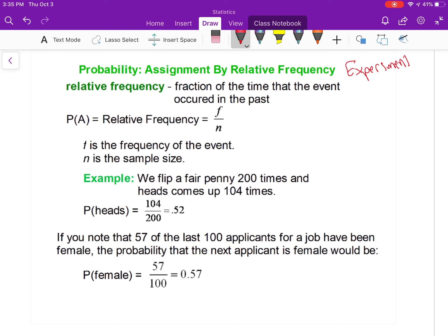Experimental probability means I'm going to run some sort of experiment. F is the frequency of whatever I'm looking for, N is the sample size. For example, my experiment is flipping a coin. A fair penny gets flipped 200 times, so there's my N. It comes up heads 104 times. If I'm looking for heads, the probability of heads would be F, the favorable number of heads, 104, divided by 200, so 0.52.